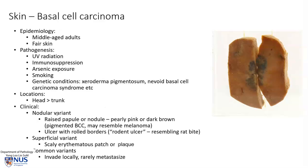Clinically, there are many variants. One of the commonest variants is the nodular variant, which usually appears as a raised area or a nodule on the skin. It can be pearly pink or dark brown. As you can see here, this is actually quite dark in colour, and this often occurs in the pigmented basal cell carcinoma.